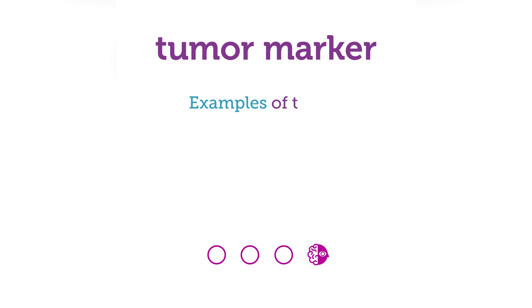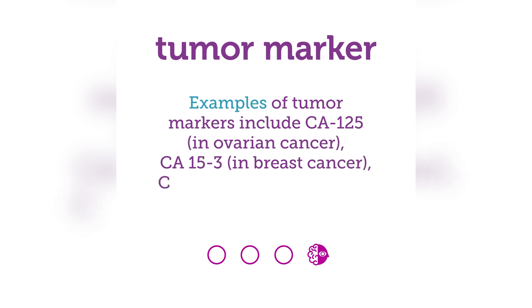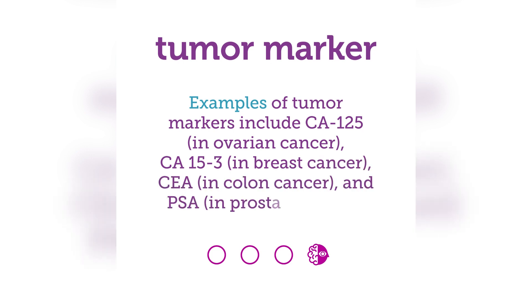Examples of tumor markers include CA-125 in ovarian cancer, CA-15-3 in breast cancer, CEA in colon cancer, and PSA in prostate cancer.